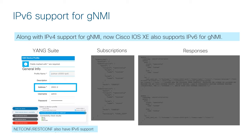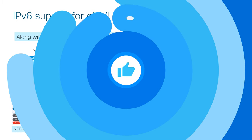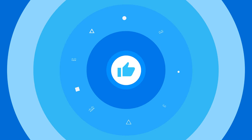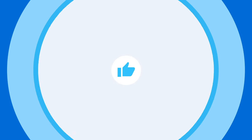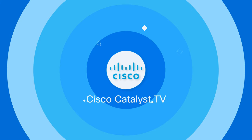Finally, starting with 17.10, IPv6 for gNMI is now supported, along with the existing IPv4 support. You can access the release notes and the release block for more information regarding all the features that we have discussed. Thank you.